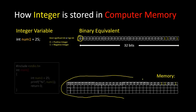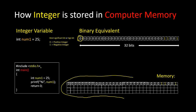Now let's consider this is our computer memory. The number 25 will be stored this way. If we write this program in Code::Blocks IDE or any other IDE and run it, we'll see the output 25. In computer memory we have this binary equivalent for 25. Whenever the program sees the percent I format specifier, it converts this binary into decimal and prints 25 as the result.